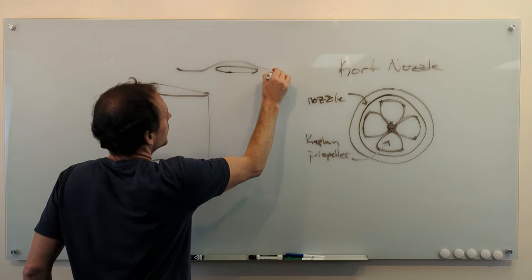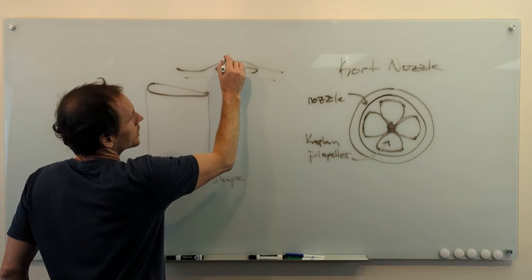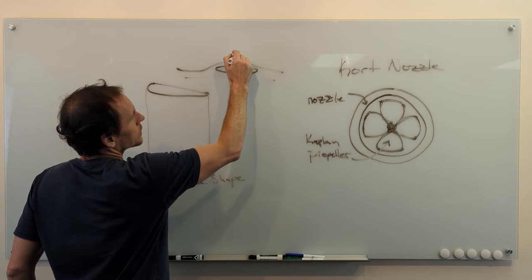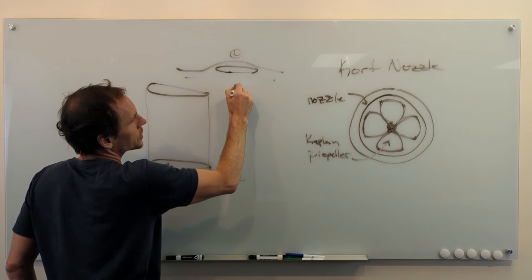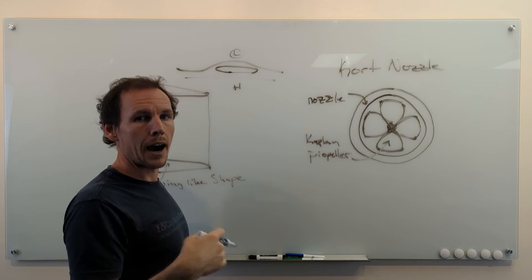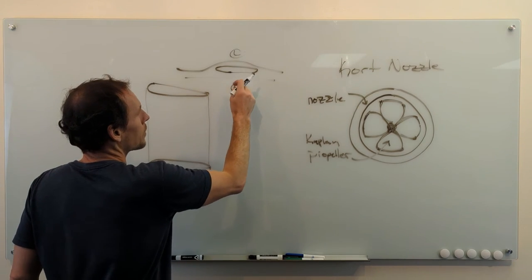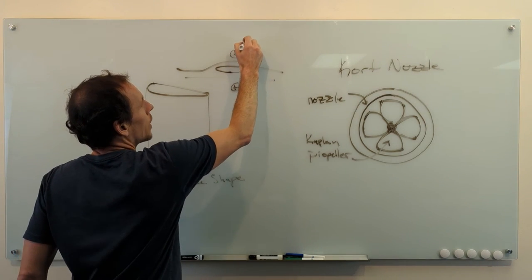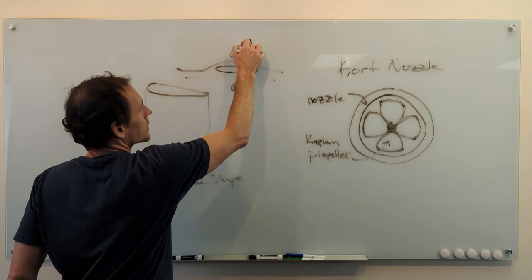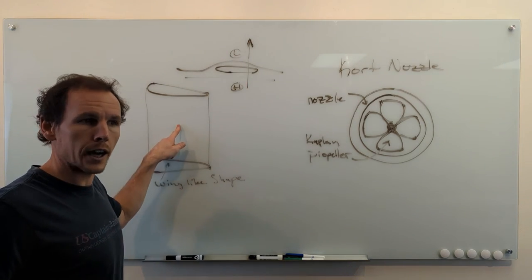Just like an airplane wing, air hits it, it goes faster on the top than it does on the bottom, creates low pressure. Pressure gradients always travel from high to low. So it's high pressure on the bottom, low pressure, it goes from high to low, you get this net force up. That's what's happening here in this kort nozzle.